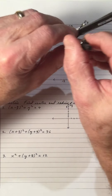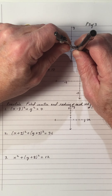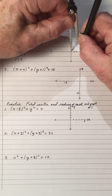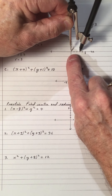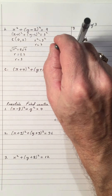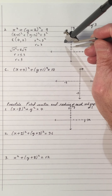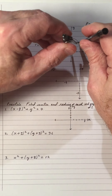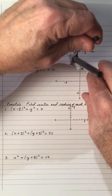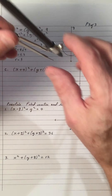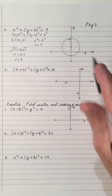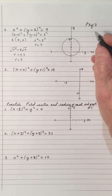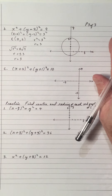I expand the protractor out to a distance of 3. There's the distance: 1, 2, 3. I put that at the center (0, 2) and draw my circle. Everything is not perfect or drawn to scale, but hopefully you can see what I'm trying to get at. The circle should pass through here with a radius of 3.